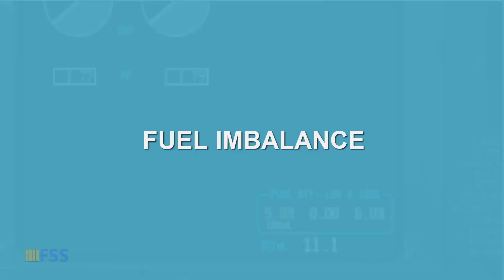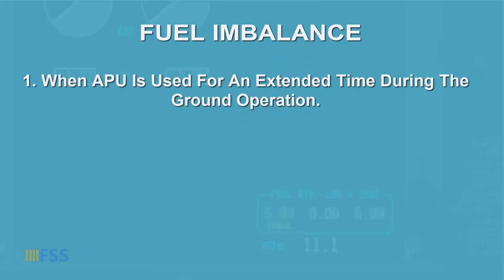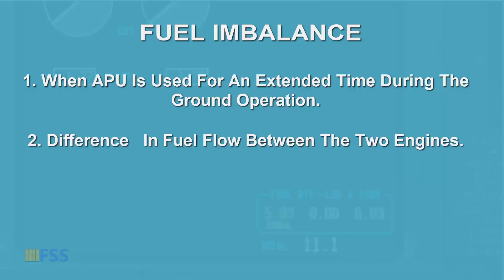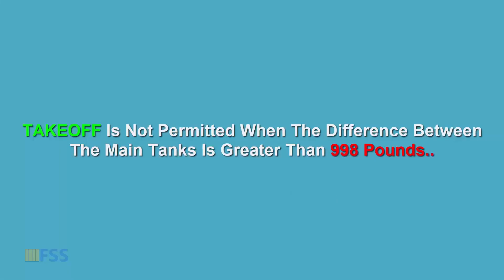A fuel imbalance can usually be caused by an extended period of APU ground operation. Otherwise it can be caused either by a different fuel flow quantity between the engines, or a suspected leak in the fuel system. You should monitor your fuel configuration during the ground cockpit preparation.